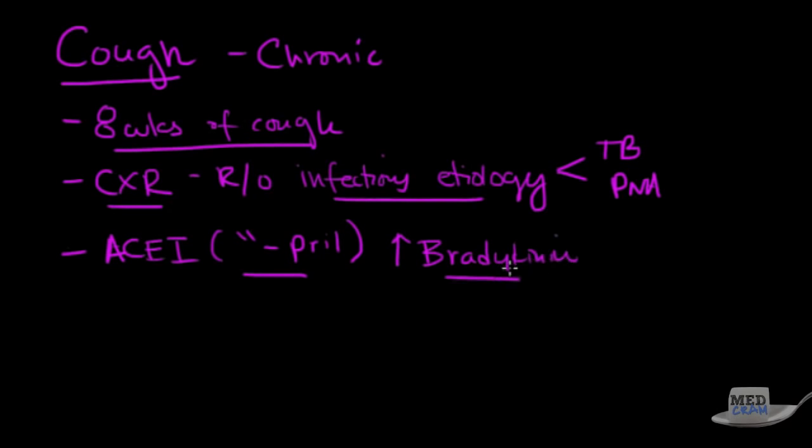And so really, if somebody's got a chronic cough that you're trying to work out on a test, the first thing you want to do is make sure you've got a chest x-ray to rule out infectious problem. And then look at their med list to make sure they're not on an ACE inhibitor. I would say about 30% of patients with an ACE inhibitor are going to have some sort of chronic dry cough. So once you've ruled these out, what are the possibilities?